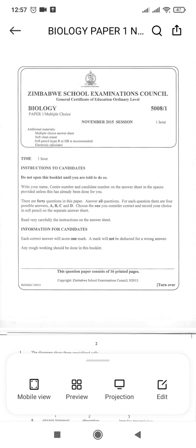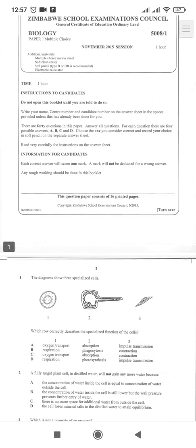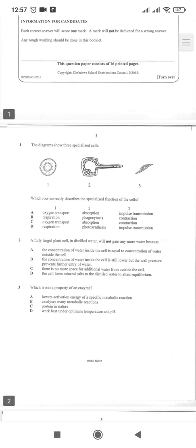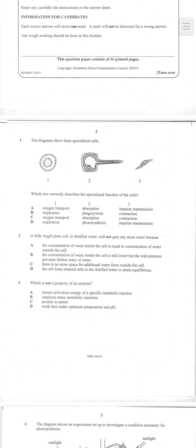Hi guys, welcome to Memos Tutorials. Today we are revising biology paper one, which is just multiple choice, for November 2015. Our first question today: we are given a diagram that shows three specialized cells, so you should be able to identify the cells.